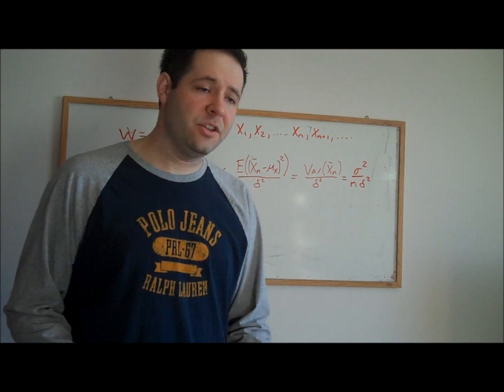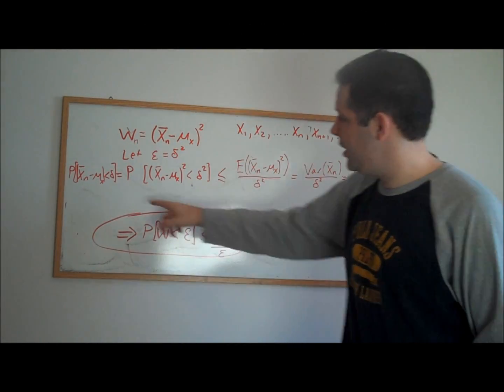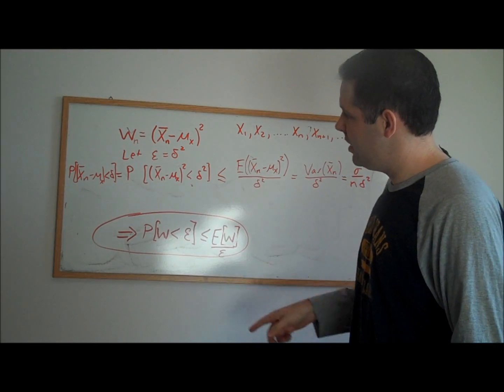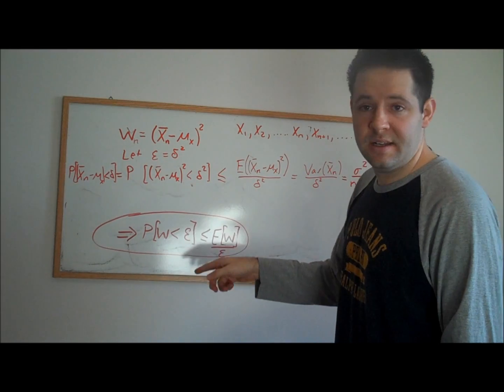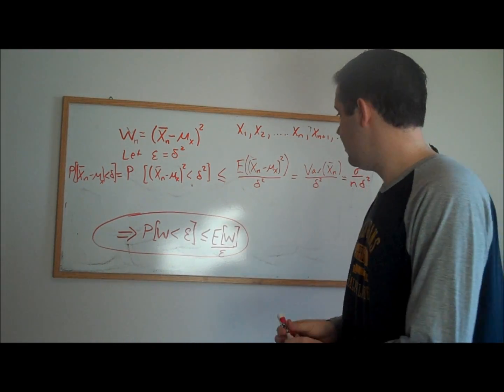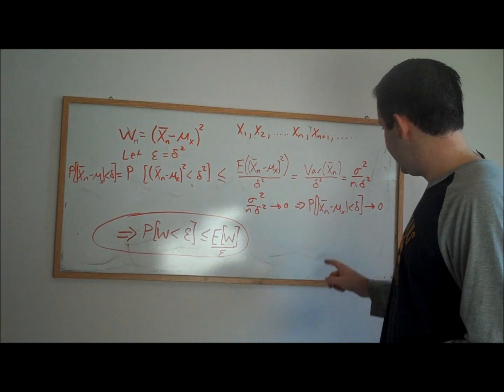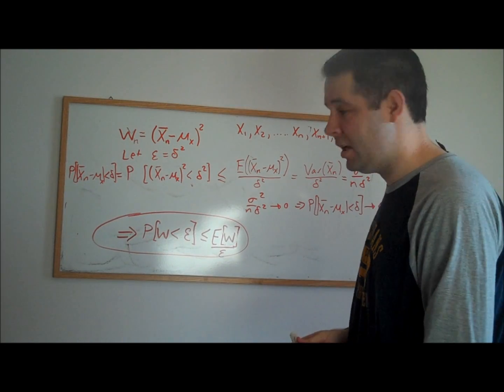Now because the sequence of expectations goes to zero, and the expectations are bigger than this probability statement, the probability that x bar minus mu in absolute value is less than delta goes to zero for any delta that's bigger than zero. What we've just shown is that x bar n converges in probability to the population mean.